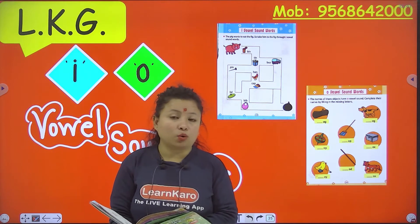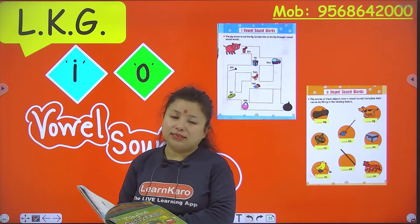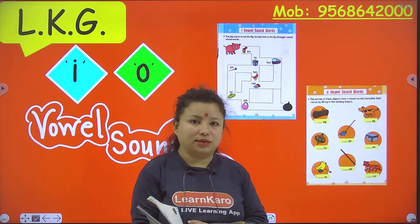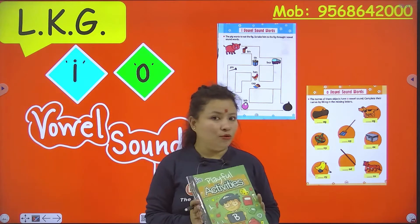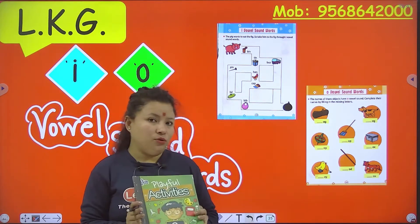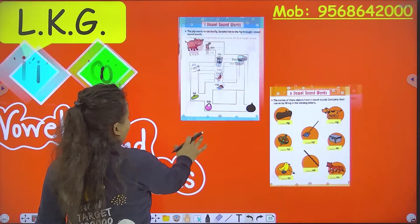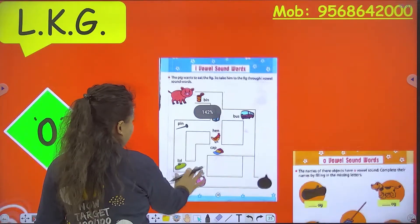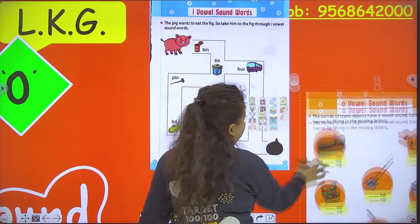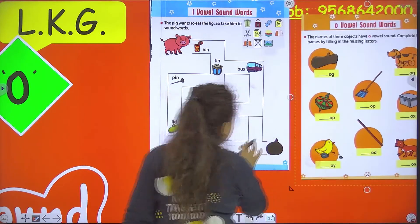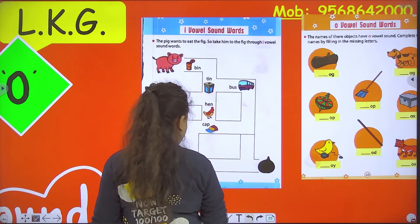We will look at which words are related with the I sound or O sound, and we will also do an activity. So open your book — we have to do an activity, so open your book and get ready with your pencil. This is page number 19 of the Playful Activity book, and this is page number 18. So I will start with page number 19.